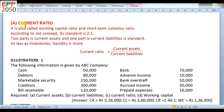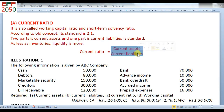Now go for the current ratio. It is also called working capital ratio and short-term solvency ratio. According to the old concept, its standard is 2 is to 1 — two parts of current assets and one part of current liabilities is standard. As less as inventories, liquidity is more. The formula is: current ratio equals current assets divided by current liabilities.